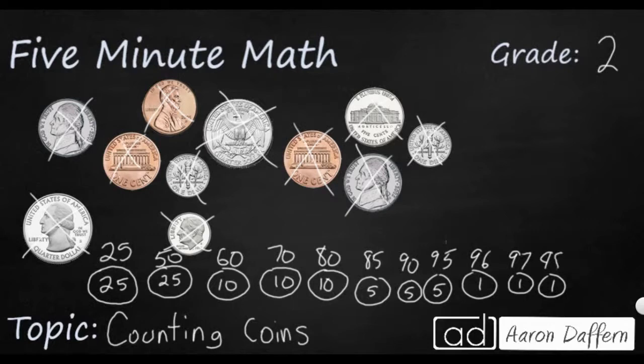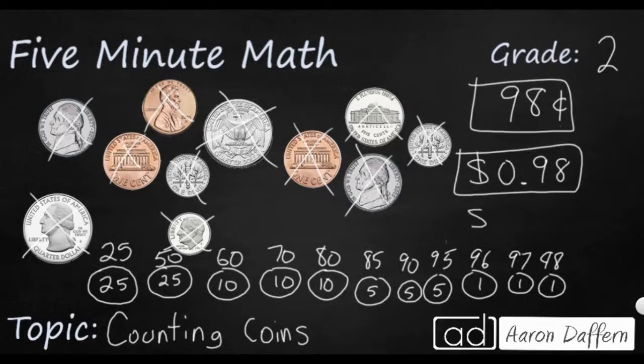So 98 cents can be written in two different ways. The number 98 with a cent symbol means 98 cents, but you can also write it with a dollar sign. Zero dollars because I'm two cents away from making a whole dollar, 0.98. You can write it this way or you can write it this way. What you don't want to do is mix the two. This doesn't make any sense. So either use the cent symbol or use the dollar sign.